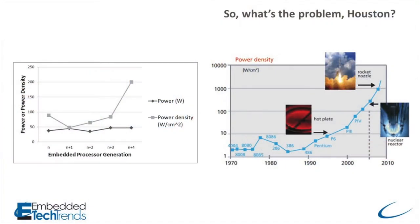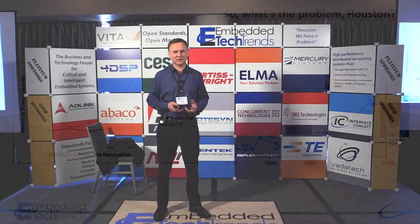One of the details we need to talk about is what's the fundamental problem that we need to fix by applying new cooling approaches like air flow through. If you look at the last five generations of embedded Intel processors, you look at two parameters: one is the overall power dissipation, and the second is the power or heat density. Power dissipation itself has been more or less below 50 watts for those five generations, and the power density has been sub-100 watts per square centimeter for the first four of those generations — and we've been able to handle those with traditional incumbent cooling approaches like air and conduction.